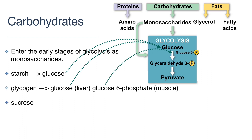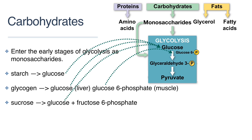Sucrose is a disaccharide made up of a molecule of glucose and a molecule of fructose bonded together. The hydrolysis of sucrose produces glucose and fructose that is phosphorylated into fructose-6-phosphate before glycolysis. Glucose can enter at the very start of glycolysis and fructose-6-phosphate enters at the third step of glycolysis.